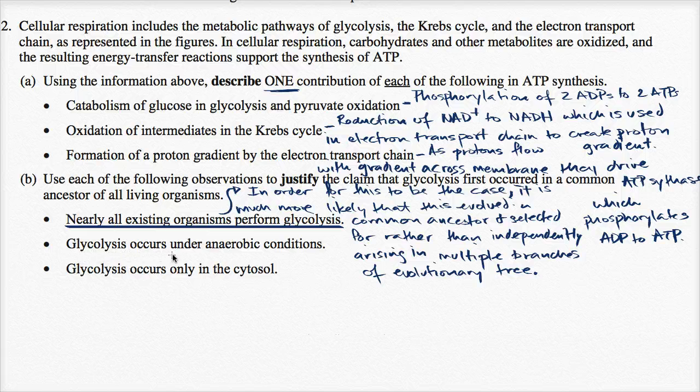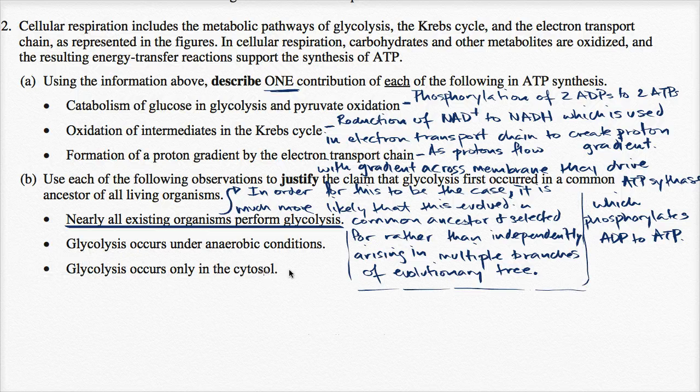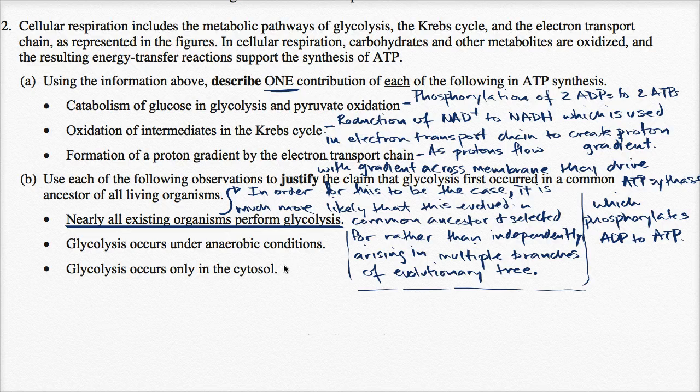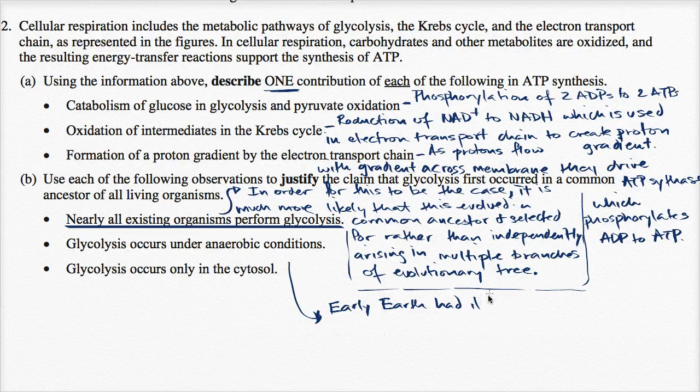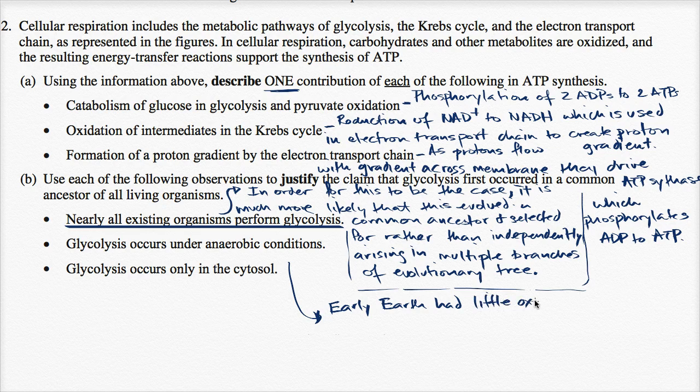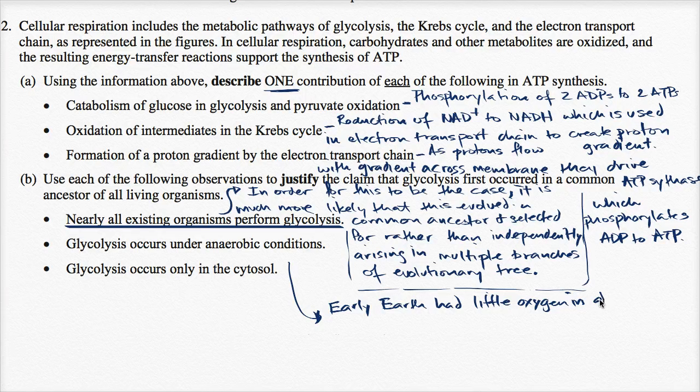All right. Glycolysis occurs under anaerobic conditions. So let me create some space here, so things don't get too jumbled up. So glycolysis occurs under anaerobic conditions. Well, early earth had little oxygen in atmosphere.